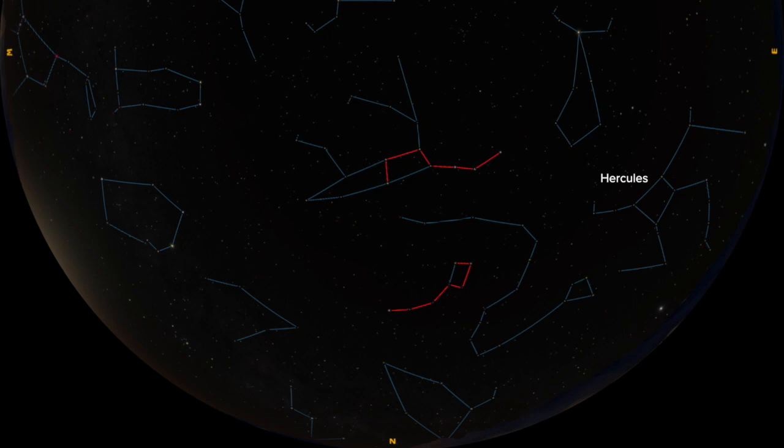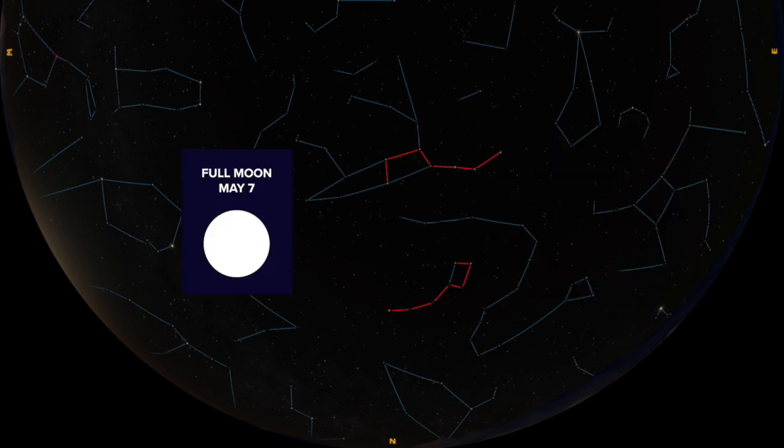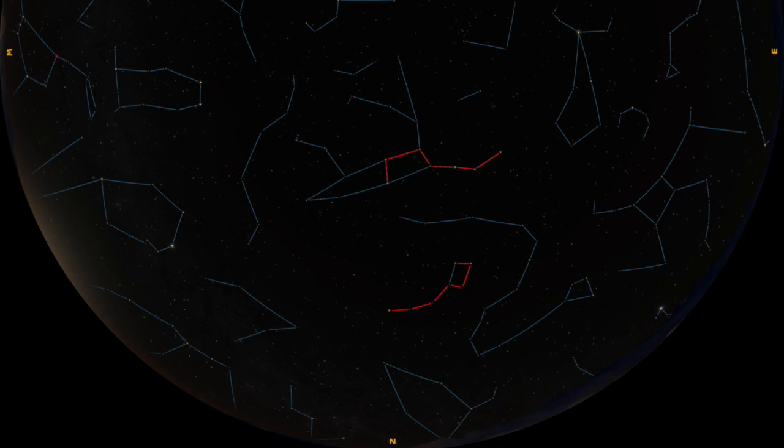These are just some of the things you can see in the night sky during the month of May. As we get later into the month, we'll be able to see the planet Jupiter rising in the east before midnight. We'll also get to observe the full flower moon on the evening of May 6th into the morning of May 7th. So head outside and look up.